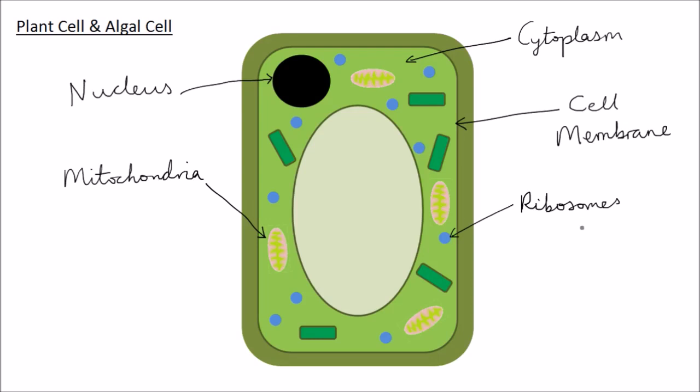In addition to these, all plant cells and all algal cells have a cell wall. The cell wall is made of cellulose and it's there to strengthen the cell and give it support.